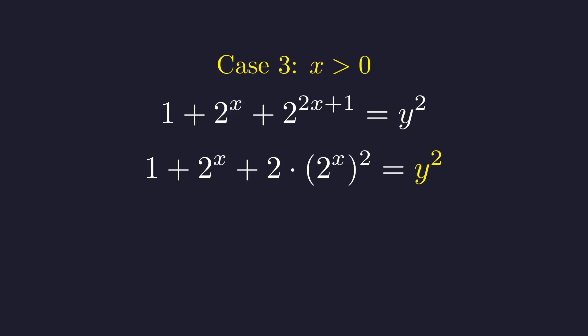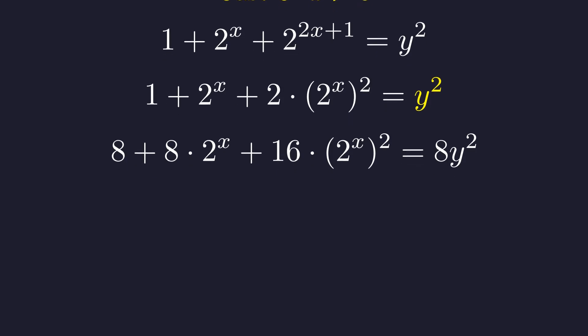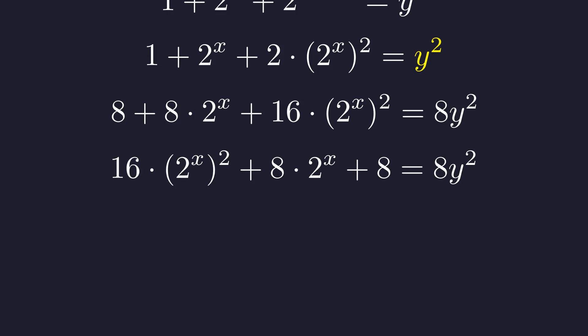We can fix this by multiplying the entire equation by a helpful number. Let's multiply everything by 8. This might seem random, but watch what it allows us to do. Rearranging the terms, we can see the beginning of a perfect square. The term 16 times 2 to the x squared is just 4 times 2 to the x, all squared. And the middle term is exactly twice that base.